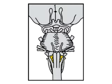Cranial nerve 12, the last of the cranial nerves, supplies motor innervation for the tongue. For lower motor neuron weakness, the tongue deviates towards the side of the lesion.